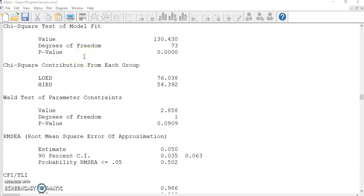After I run the command file, in the output file, in the middle of all the model fit indices, there is a part for the Wald test of parameter constraints. The test statistic is 2.858. Because it is for the comparison of two values, the degrees of freedom is 1. Given a p-value of 0.09, which is greater than alpha of 0.05...